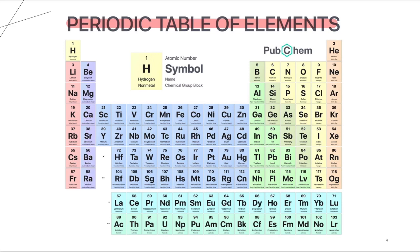This is the periodic table of elements, which contains all the chemical elements arranged in order of the number of protons. As you can see, hydrogen has proton number 1, followed by helium 2, lithium 3, beryllium 4, boron 5, carbon 6, nitrogen 7, oxygen 8, fluorine 9, and neon 10, and so on. All the elements in the periodic table are arranged in order of the number of protons.